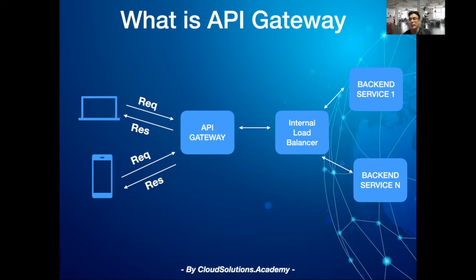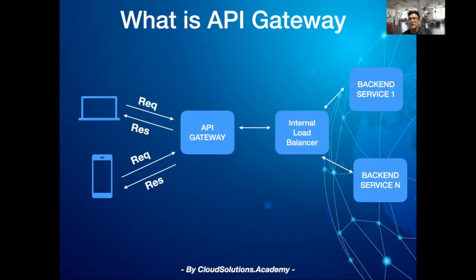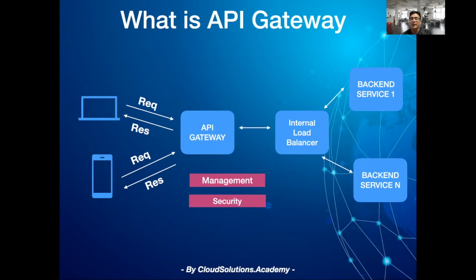Prior to JSON, XML was widely used. An application typically has hundreds or thousands of APIs, and it needs to be managed in a consistent way. Similarly, for security, you would like to use standards like OAuth.